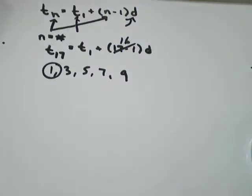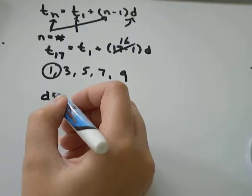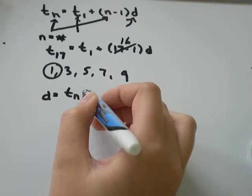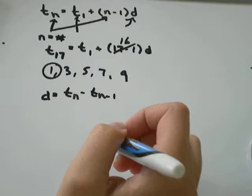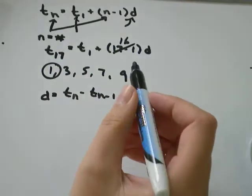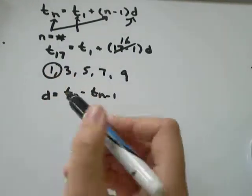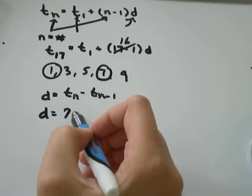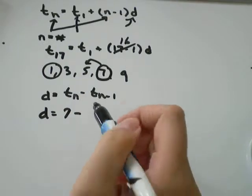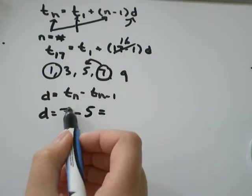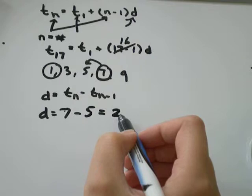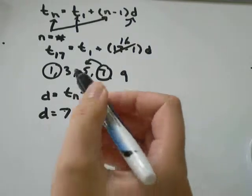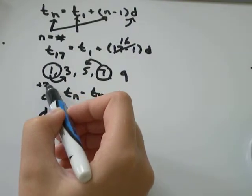d is the common difference. And you can think of it as t_n minus t_n minus 1 if you want. And it's just look at two terms, any two in the sequence. And it's one of those terms minus the one that came right before it. So in this case, I could say it's 7 minus 5 would be 2. And positive 2, the sign's important. All that tells me is to get from one term to the next, I add 2.